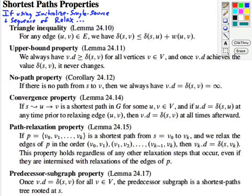We'll wrap up with a summary of important properties of the shortest paths algorithms when we use initialize single source and do a sequence of relaxation calls. So the triangle inequality says that if you have the delta(s,v) is the shortest distance to v, then by adding an edge from u to v, you can't get any less. It has to be greater than or equal to.